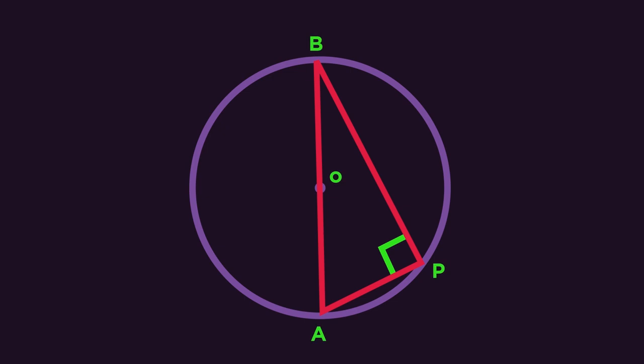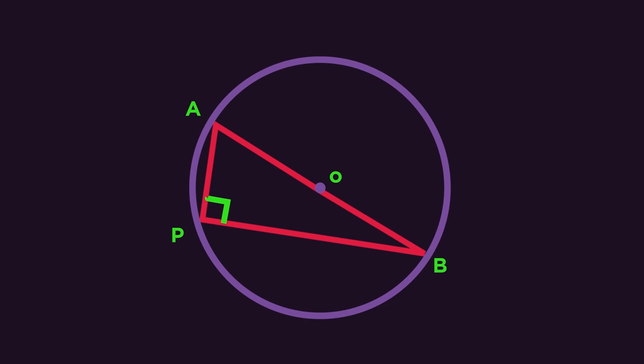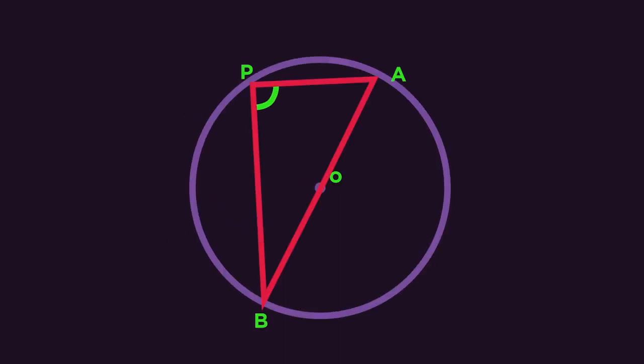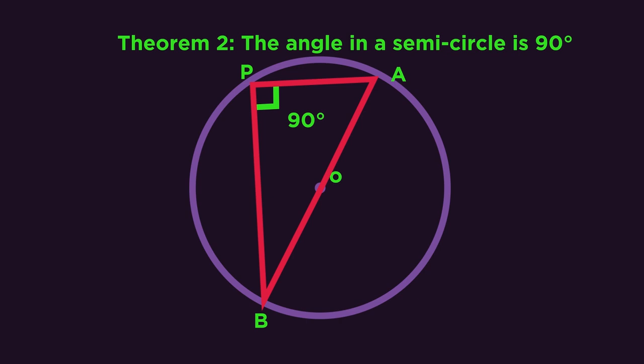So here's theorem two. We have a semicircle. What do you notice about the angle? The angle in a semicircle is always 90 degrees and that's theorem two.